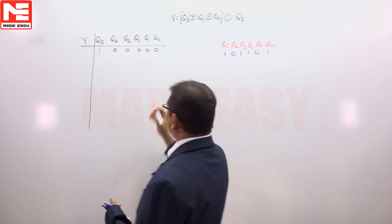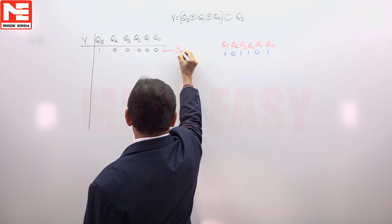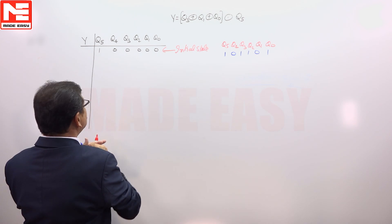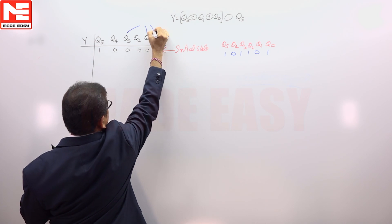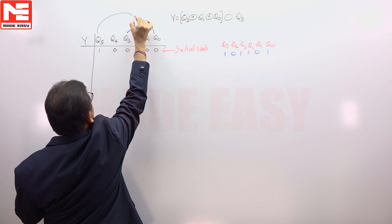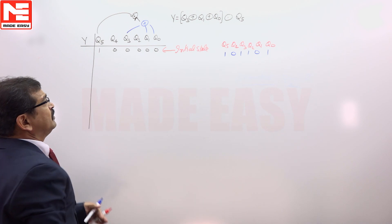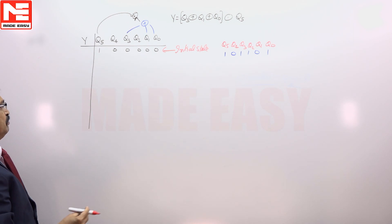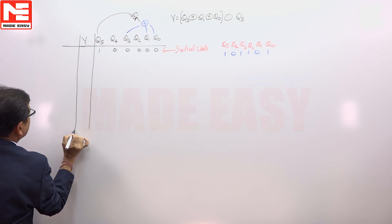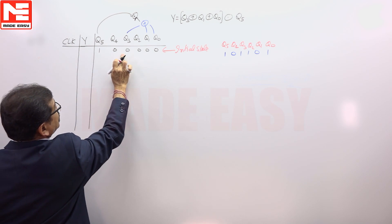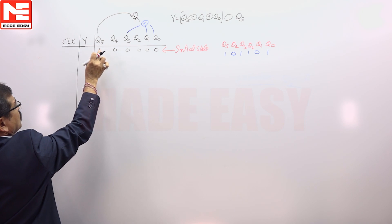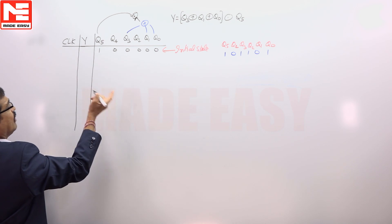Now while applying the clock signal, we need to recognize after how many clock pulses the register reaches the required state. Before applying the clock signal, we look at the exclusive OR between Q3, Q1, Q0, which is 0. It is exclusive NOR with Q5=1, and 1 XOR 0 exclusive NOR gives 0.